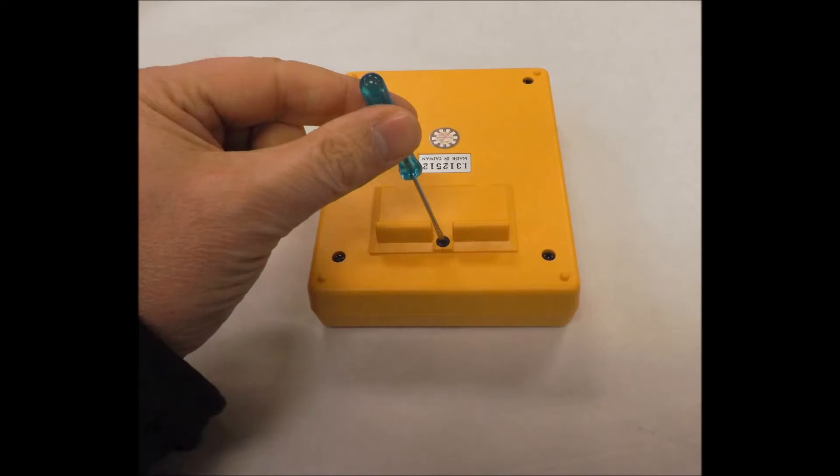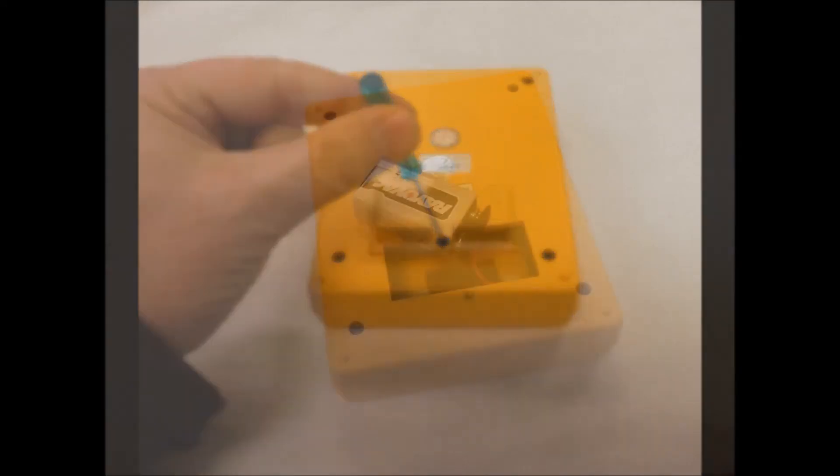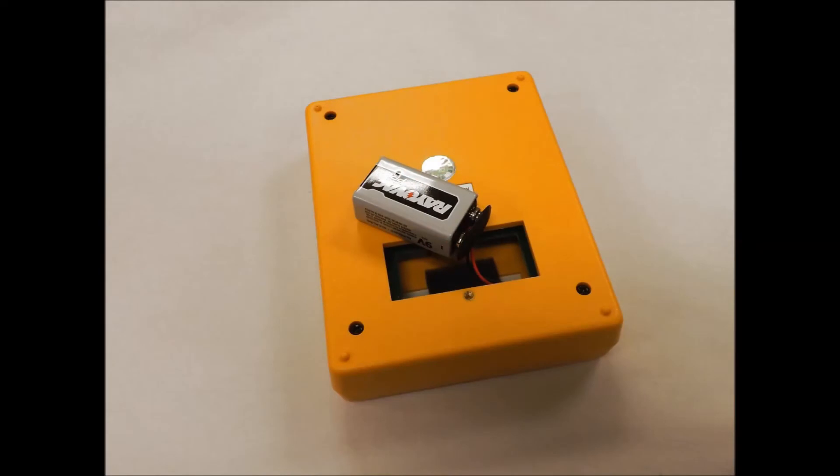To use the body voltage meter, begin by inserting a new 9 volt battery in the meter. Open the battery compartment on the back of the meter and connect the battery.